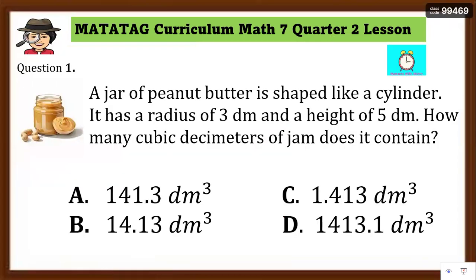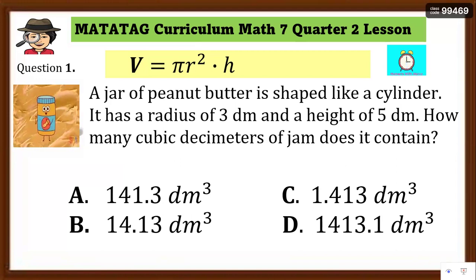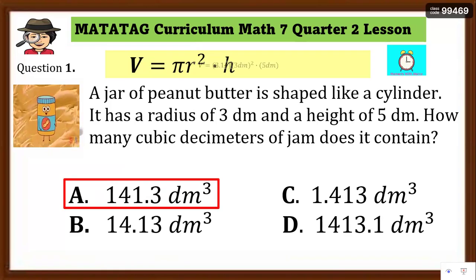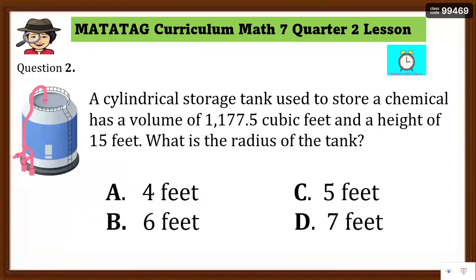You are going to answer question number 1. Ready? Timer starts now — use the formula. To find the volume given the radius and height, just substitute into the formula. The answer is letter A: 141.3 cubic decimeters. Ready for number 2? Use the formula.